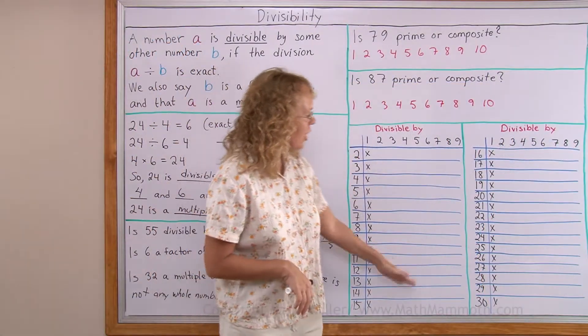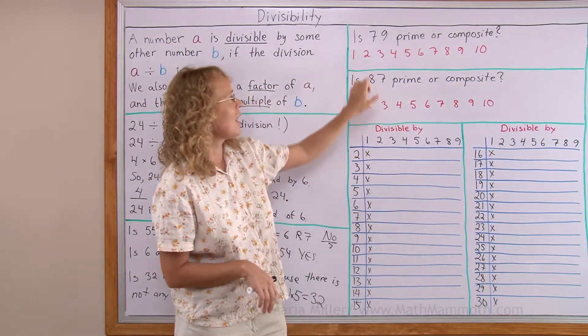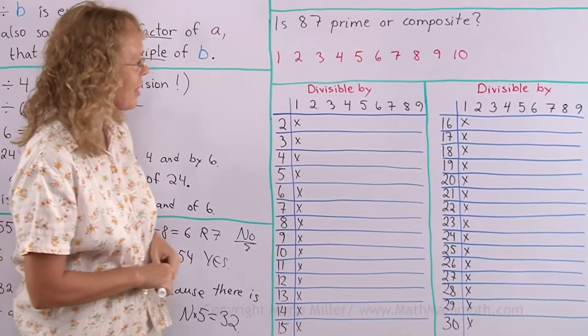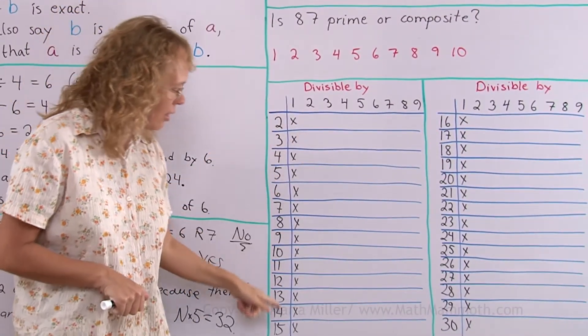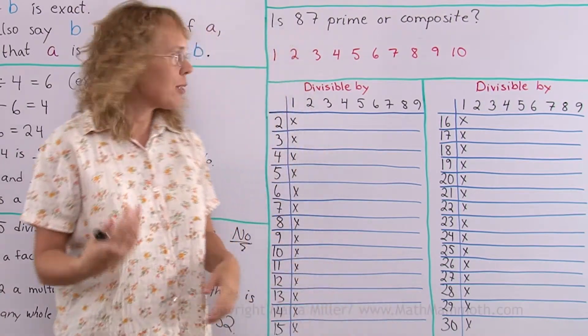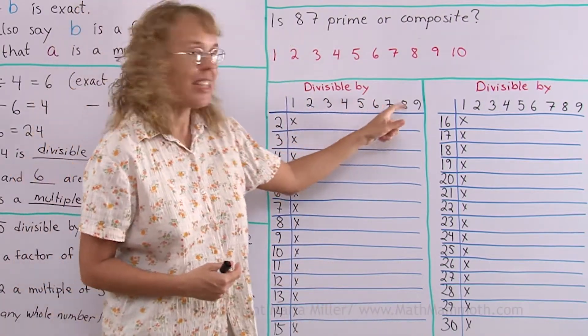Now we will go on to this chart here first and then we will study lastly these two questions. Here I made a chart and we're going to study if these numbers here, up to 30, are divisible by 1, 2, 3, 4, 5, 6, 7, 8, 9.